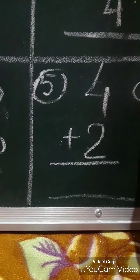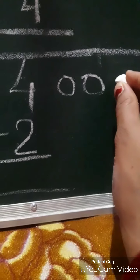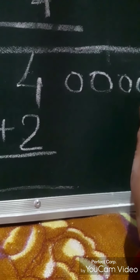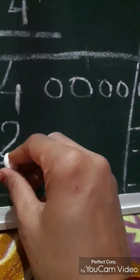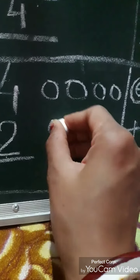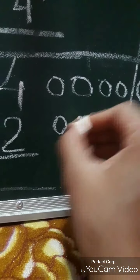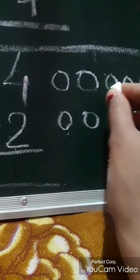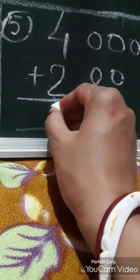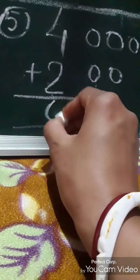We move to our next sum. Upside number four is written, so we draw four circles. Downside number two is written, so we draw only two circles. After drawing, we start our counting: one, two, three, four, five, six — so the number six is the answer for this sum.